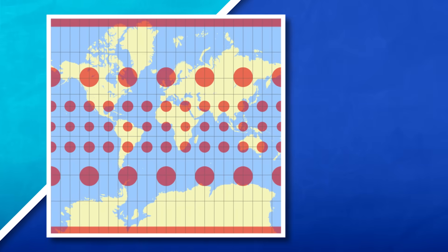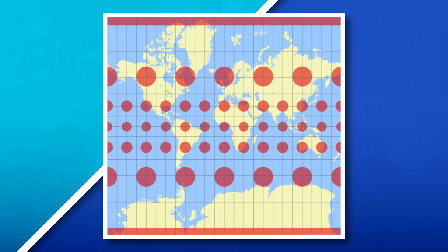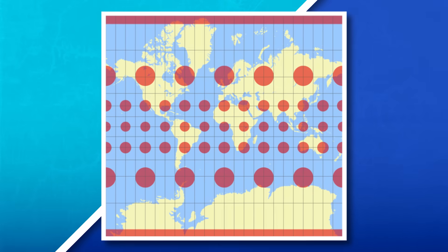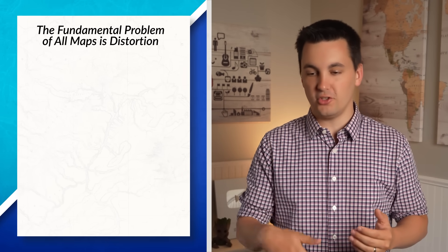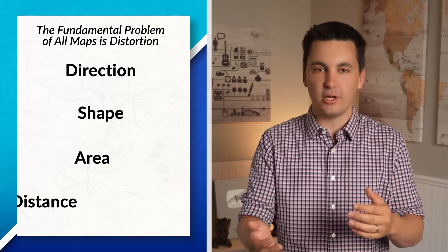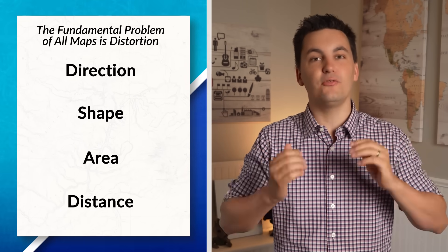If we were to put all these circles around the globe and then project them onto the Mercator map projection, we would get an image that looks like this. Notice how the circles still keep their shape, but the size varies depending on the location of the circle. And it isn't just this map that has some pretty major flaws — in fact, every map you have ever looked at has distortion. Whenever we try to view the globe on a flat surface, we can see that distortion impacts either the direction, the shape, the area, distance, or sometimes all of them at once.